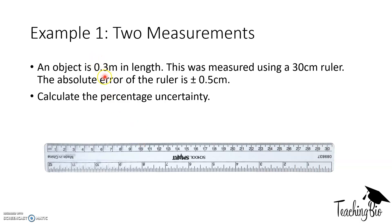So here's a question. An object is 0.3 meters in length. This was measured using a 30 centimeters ruler. The absolute error of the ruler is plus or minus 0.4 centimeters. Calculate the percentage uncertainty. Okay, so let's break this down. Because we've used a ruler, there's uncertainty at this end, where we first measure, and uncertainty at this end. So always remember, if you use a ruler, there is two chances of uncertainty. One at the initial and one at the final end. So because of that, we times the absolute error by two, because there's two sets of error.